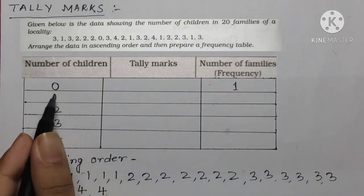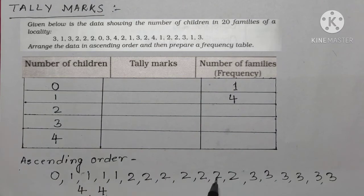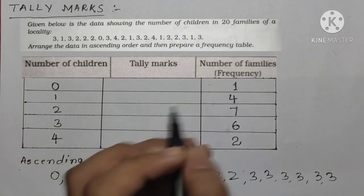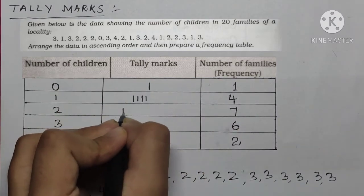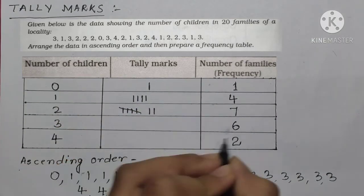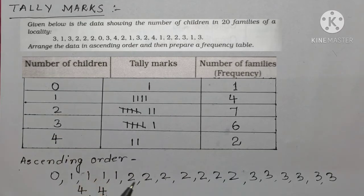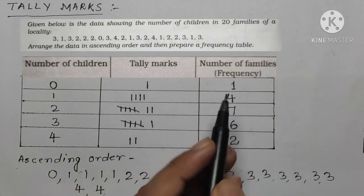One is occurring four times; two is occurring seven times; three is occurring six times; and four is occurring two times. We write the tally marks accordingly: one tally mark is one line, four tally marks is four lines, seven tally marks uses a group of five plus two, six tally marks is a group of five plus one, and two tally marks is two lines. This completes the frequency table.